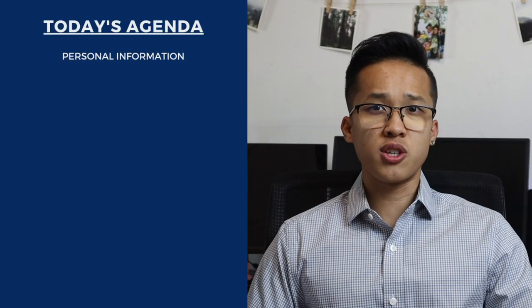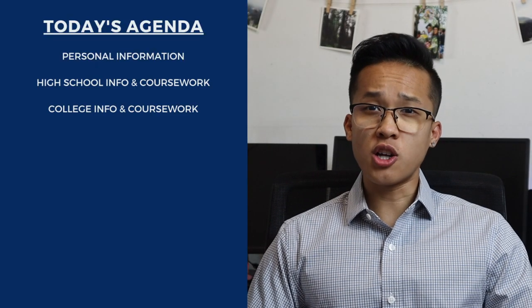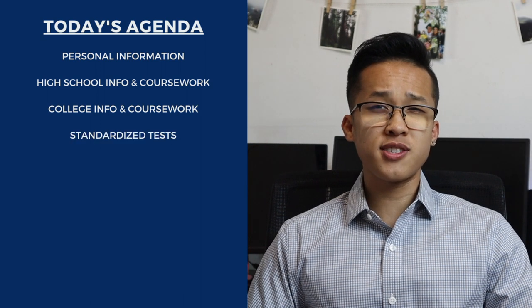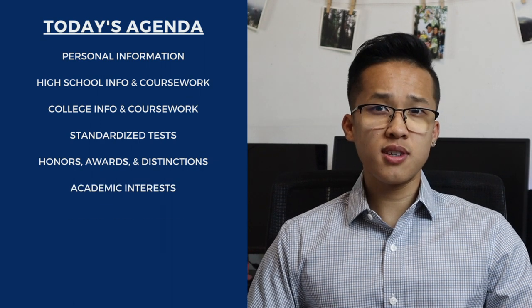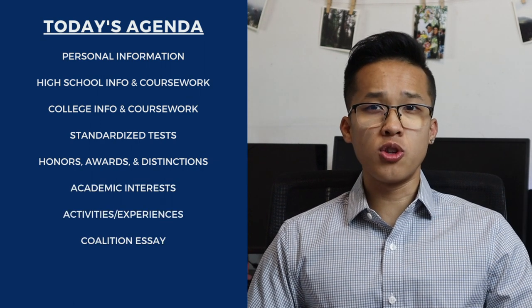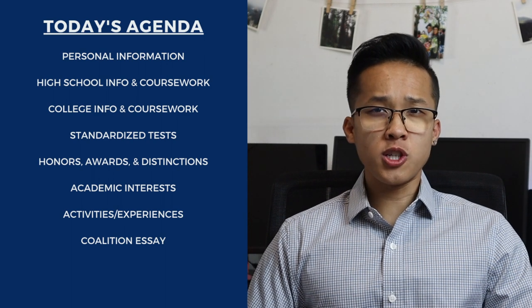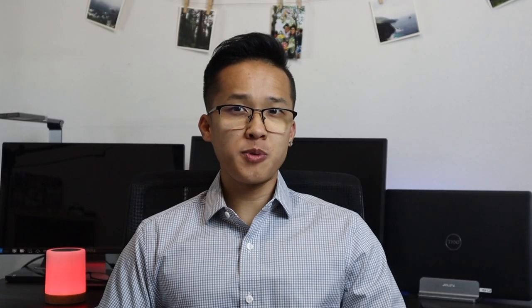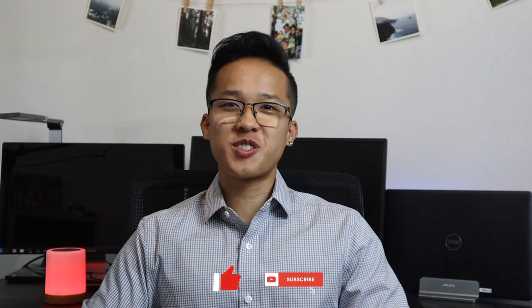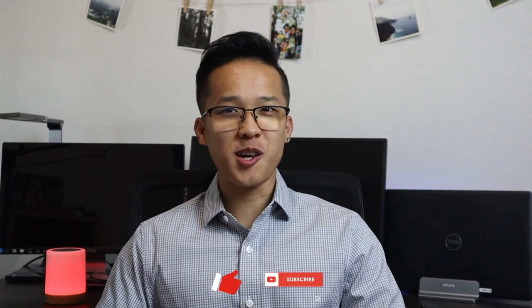For today's video I'll be focusing on the last main section of the Coalition Application and that's the general profile. In general the profile section will ask for things such as more information to learn about who you are as a student, high school information and coursework, college information and coursework, official standardized testing scores, honors awards and distinctions, academic interests, activities or experiences, and lastly the Coalition Application Essay. To finish off the video I'll also go over some brief tips and some general information about how to submit your application. But as always before we start please go ahead and like the video and subscribe if you haven't done so already — I know I say it all the time but it really does help the channel out. With all that being said, let's get started.